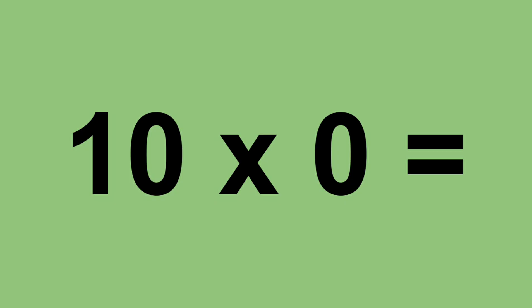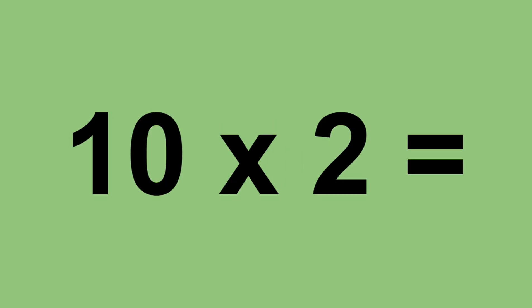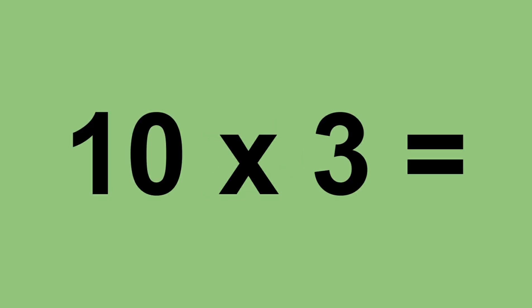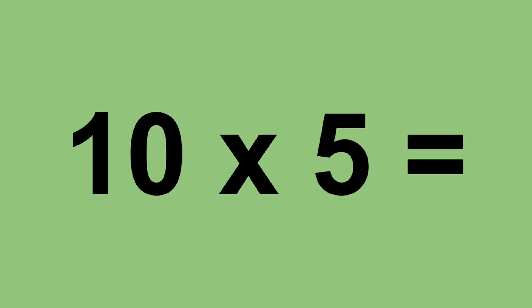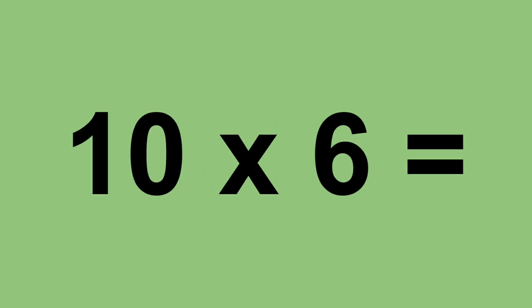Ten times zero equals zero. Ten times one equals ten. Ten times two equals twenty. Ten times three equals thirty. Ten times four equals forty. Ten times five equals fifty. Ten times six equals sixty.